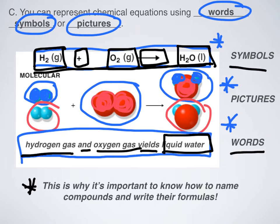It's still important to know how to name compounds and write their formulas, because you could be given words and have to translate them into symbols. If you don't remember how to write chemical formulas — for example, sodium chloride or silver nitrate — you might not write the correct symbol. Make sure you look back at ionic compounds and covalent compounds and how to name those.